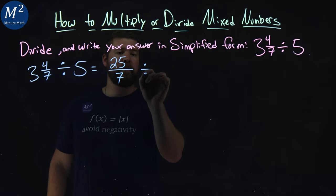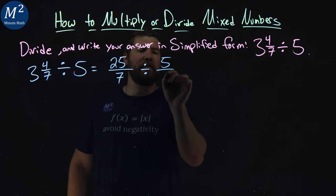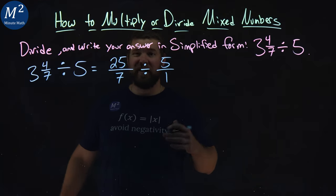From there, we're still divided by 5 as an improper fraction, which is just 5 over 1. Not too bad.